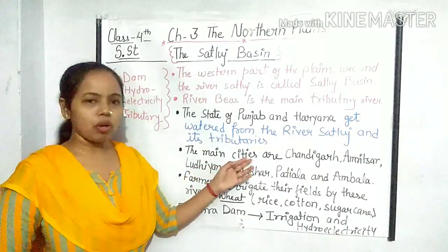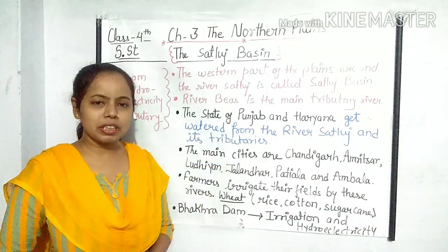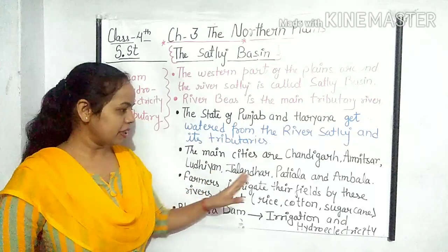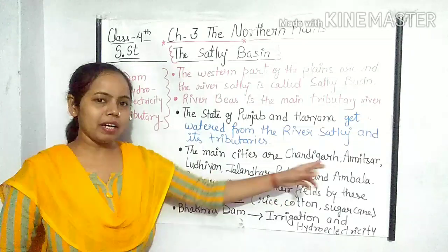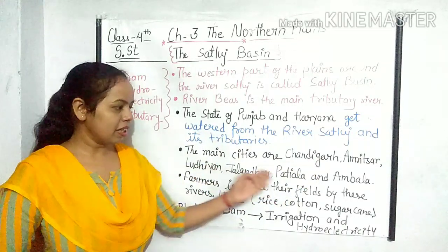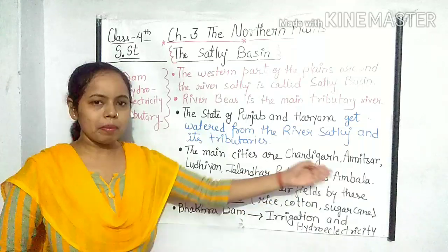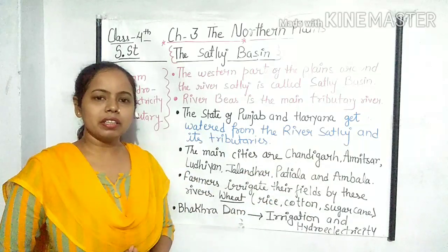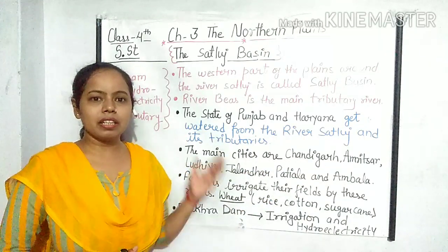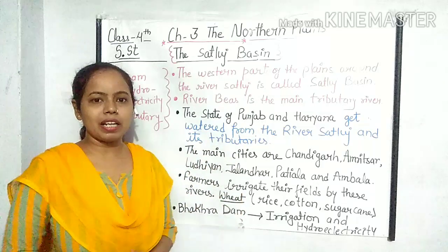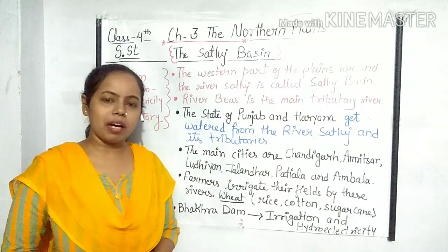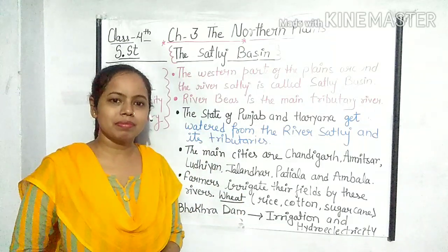The main cities of the Satluj Basin are Chandigarh, Amritsar, Ludhiana, Jalandhar, Patiala and Ambala. Ye sab Satluj Basin ya Satluj ghaati mein aane wale kuch mukhy shaharon ke naam hain.